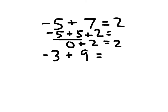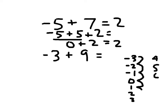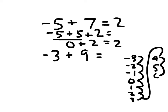We'll use the other approach for negative 3 plus 9: count up from negative 3. Counting up: negative 2, negative 1, 0, 1, 2, 3, 4, 5, and 6. That's 9 steps total, so negative 3 plus 9 is 6.